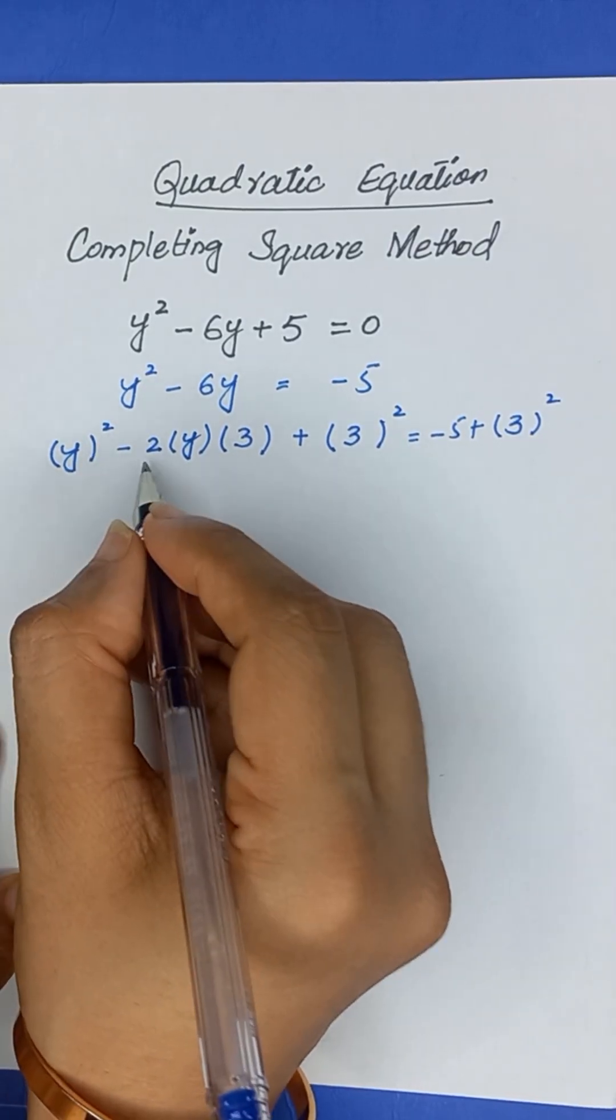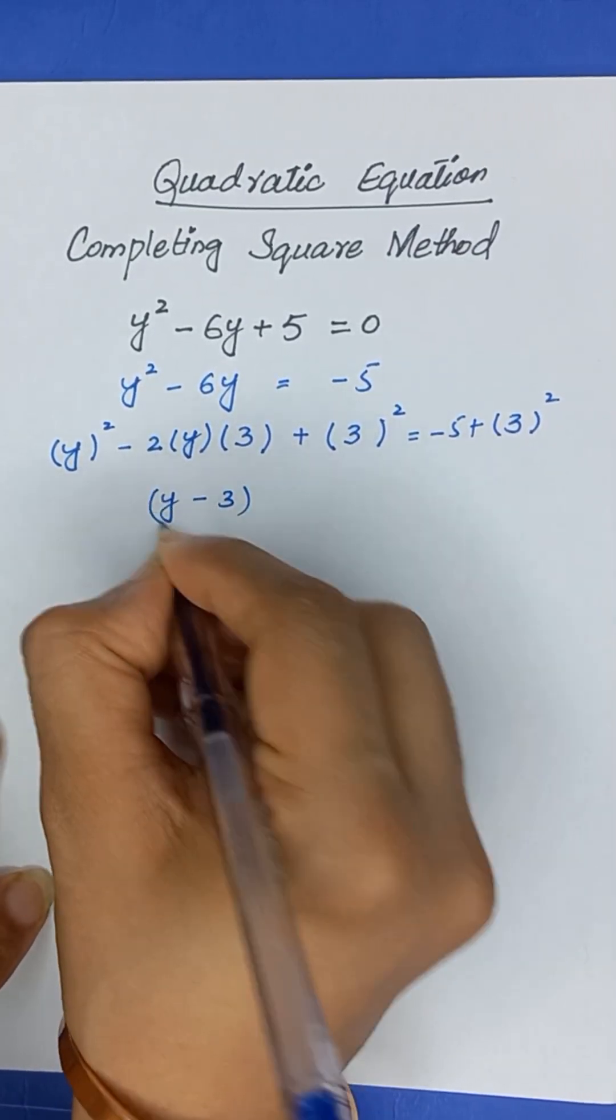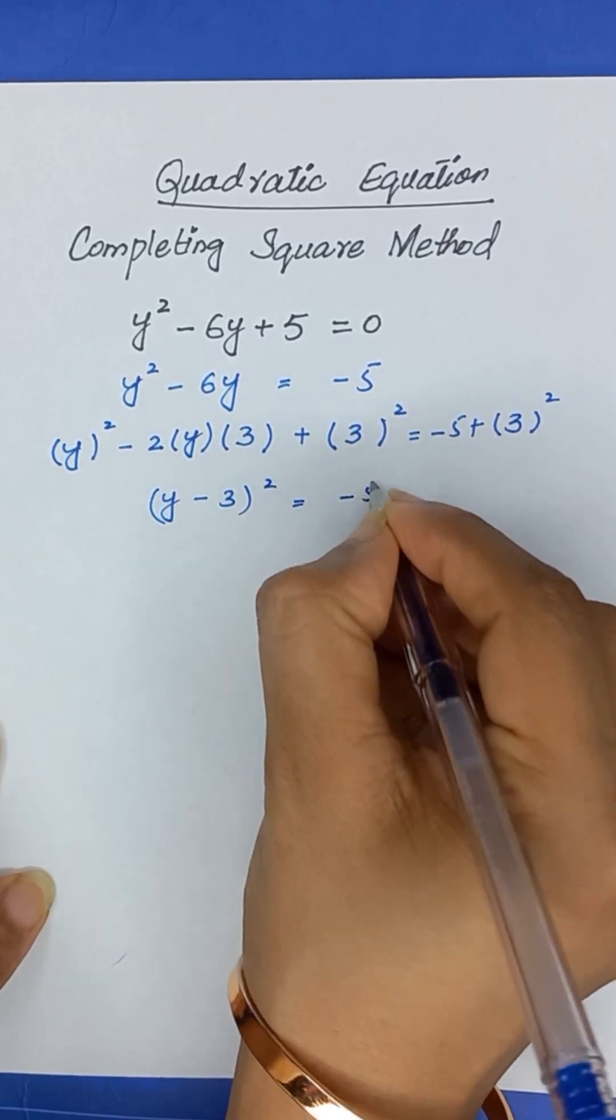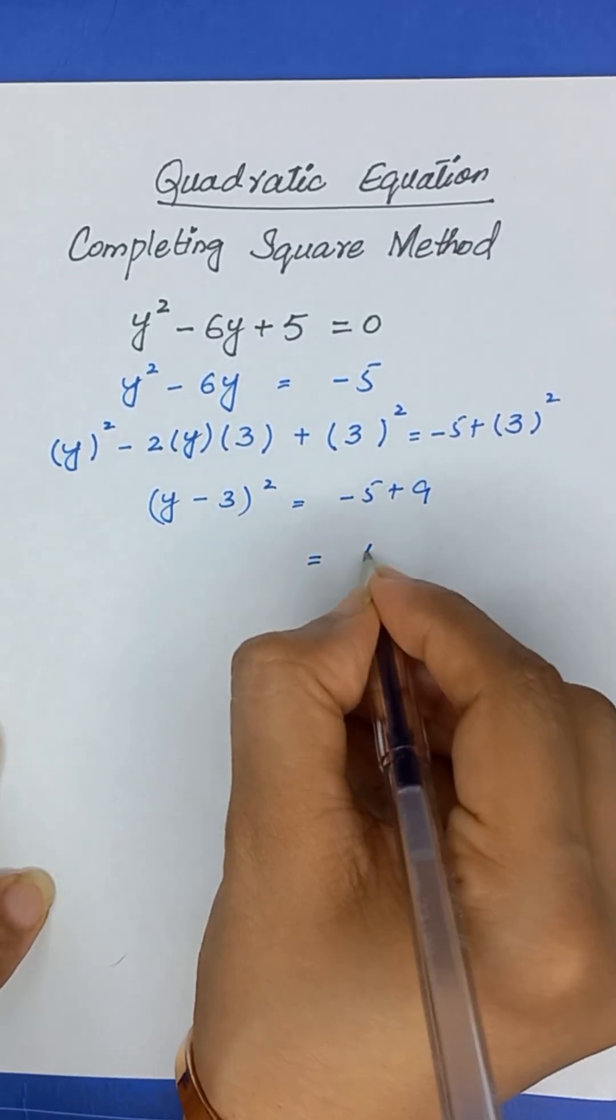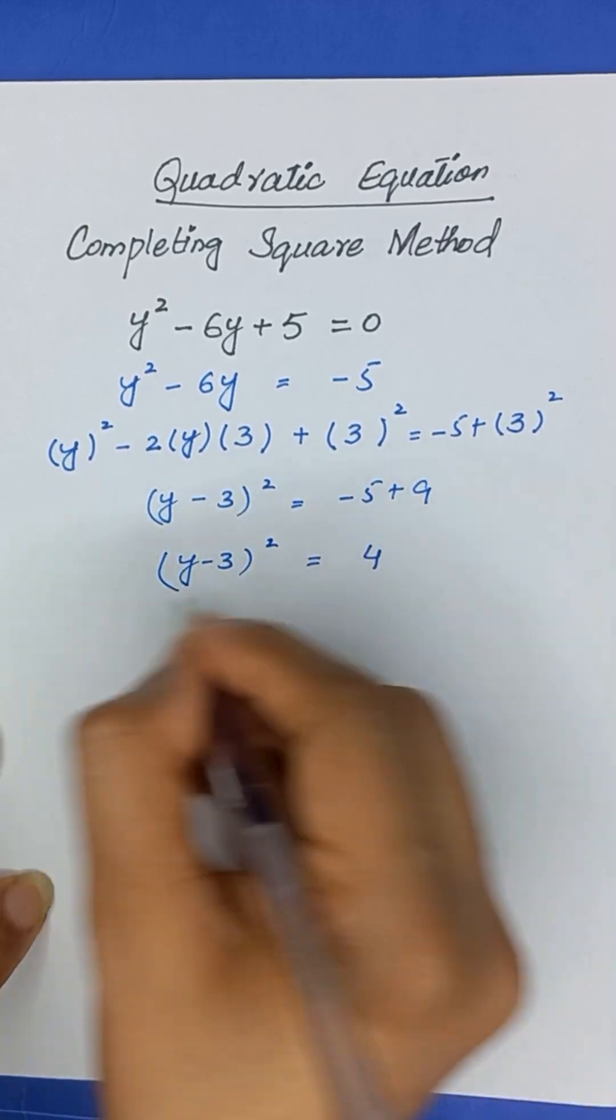Now, it is in the form of a squared minus 2ab plus b squared. So, it can be written as y minus 3 whole square is equal to minus 5 plus 9 which will be equal to 4. So, it will be y minus 3 whole squared is equal to 4.